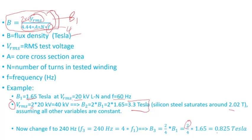...the flux density was very low because I increased the frequency. So the frequency increase compensated for the voltage increase. So 0.825 Tesla is way less than 2.02 Tesla.